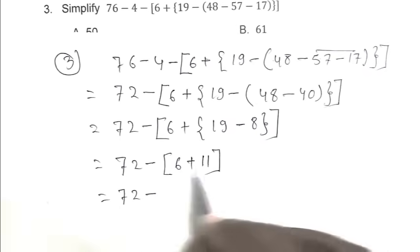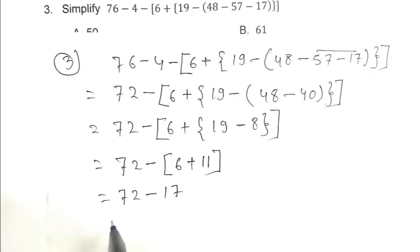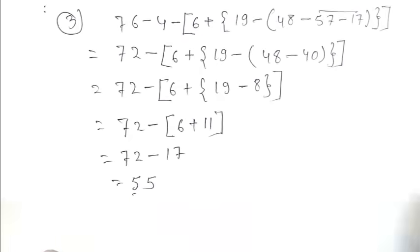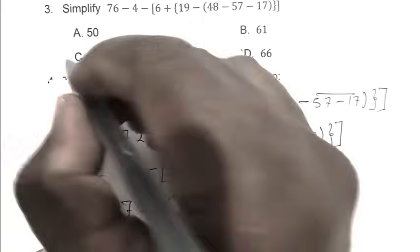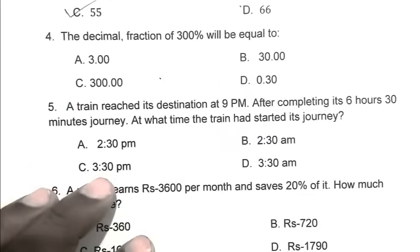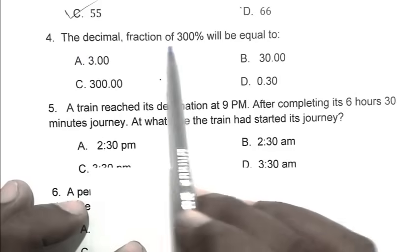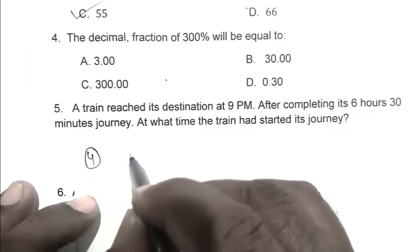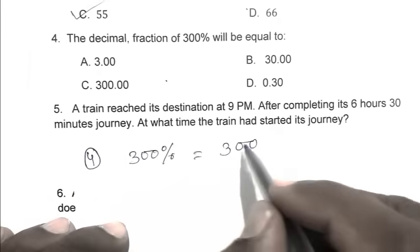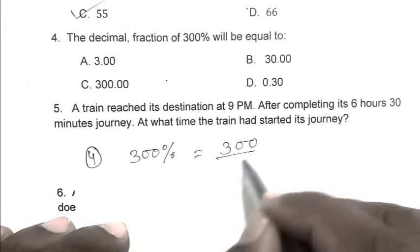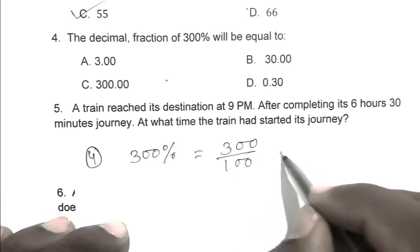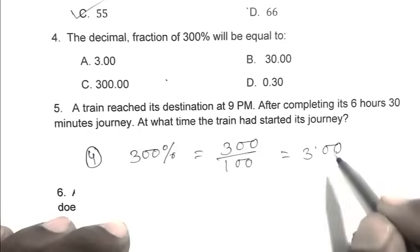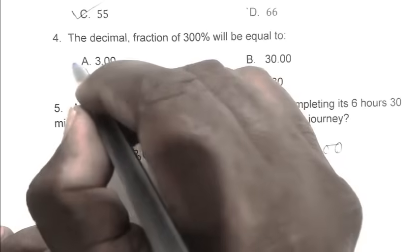Question number four: the decimal fraction of 300 percent will be equal to? So 300 percent, we convert it 300 by 100, so it will become 3.00. So A is the right answer.